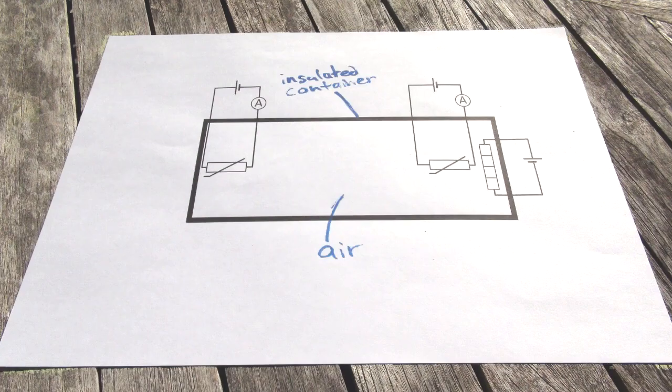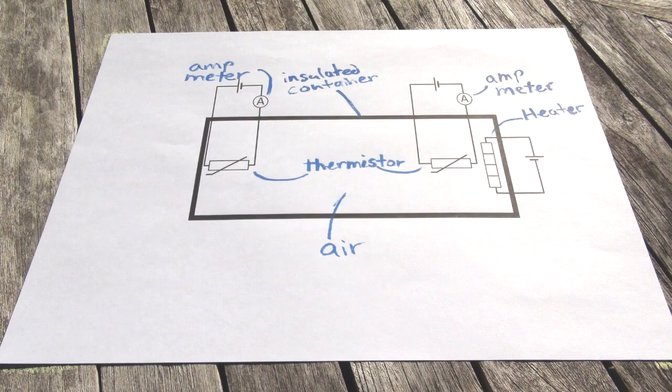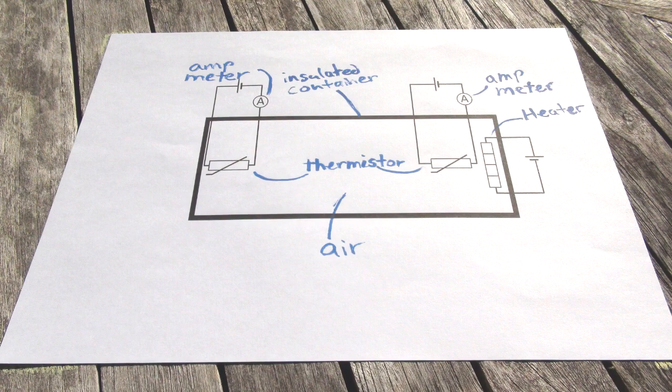This experiment would consist of placing air in an insulated cylindrical container with a heater on one end, a timer and two thermistors, one on each end, both in a circuit with a cell and an ammeter.